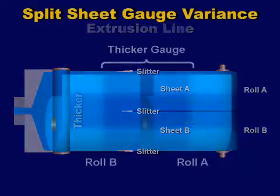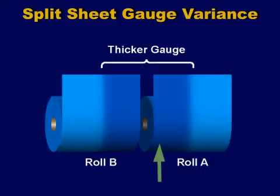When roll A is used, the left side will need more heat to give it the same forming properties as the thinner side. But the heat requirements are opposite on roll B — it's the right side that needs more heat.